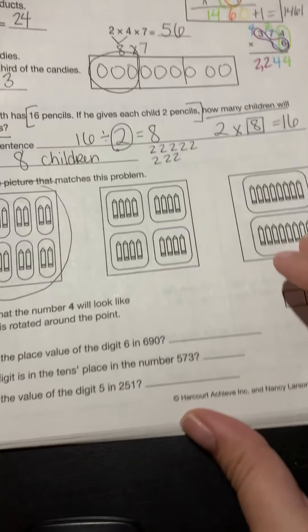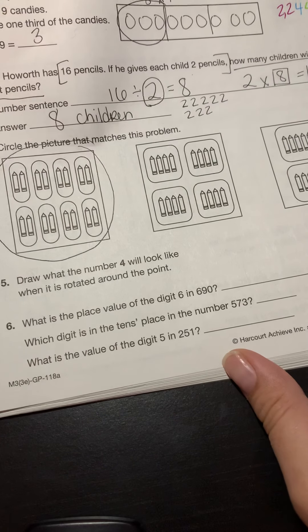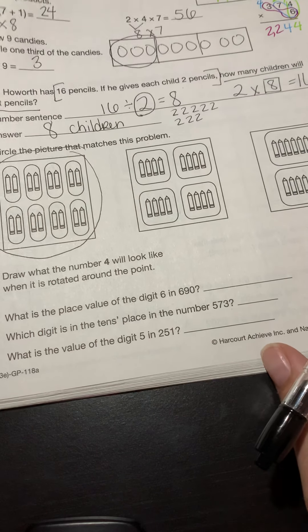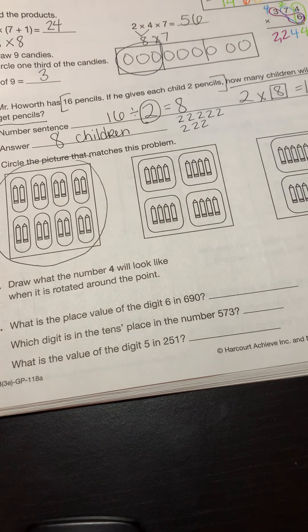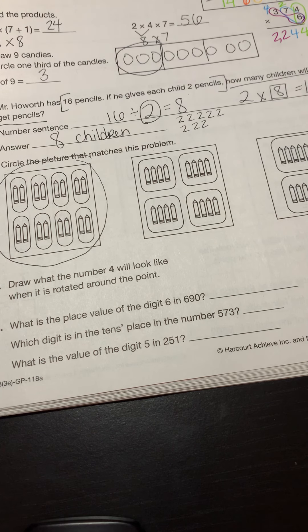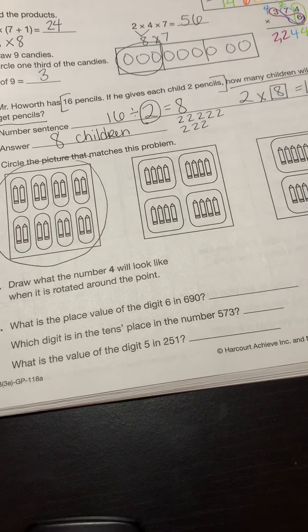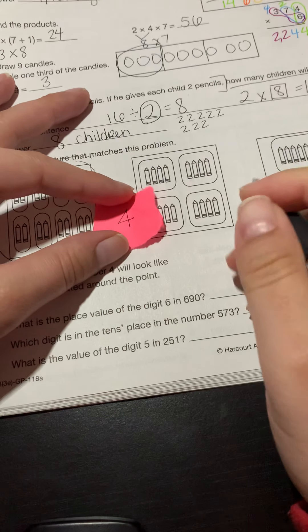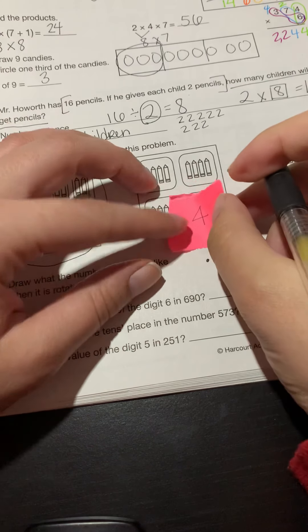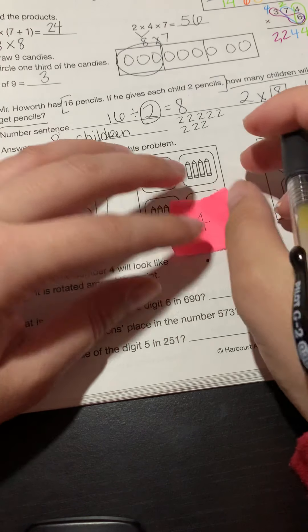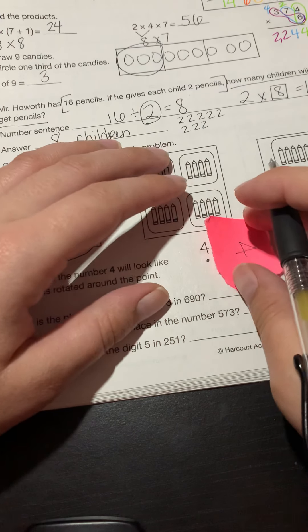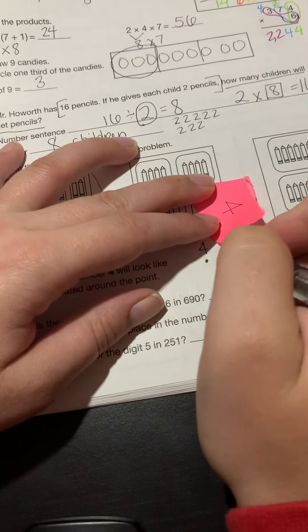Let's take a look at the next problem here. Number five, draw what the number four will look like when it is rotated around a point. Okay. So remember the easiest way to do this would be, for this one, since we're using an actual number, will be to just get a small piece of paper and draw whatever it is on there. So you have the number four and we're drawing it like they draw it. We're going to put a little point here. So when it's in front of the point, it's going to look normal. So I'm going to draw my four like this. If I rotate it to the side, now it's going to look like this on the side. So you might need to change your paper.